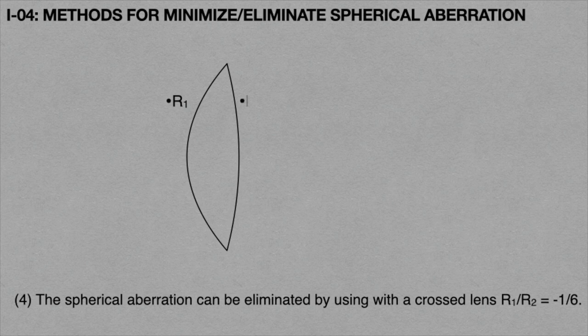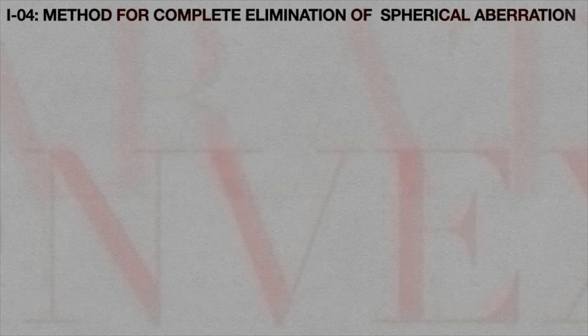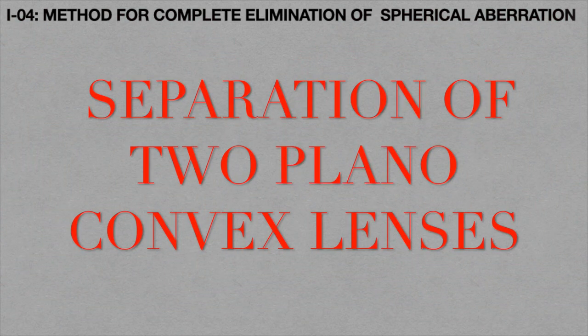The fourth method: spherical aberration can be eliminated by using a cross lens where R1/R2 = −1/6. A convex lens contains two radii of curvature, and these radii are in the ratio R1/R2 = −1/6. The fifth method is the separation of two plano-convex lenses, which can completely eliminate spherical aberration.